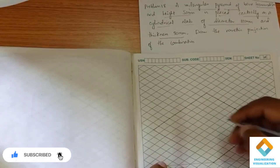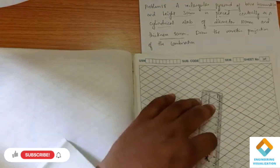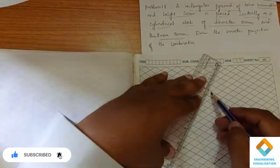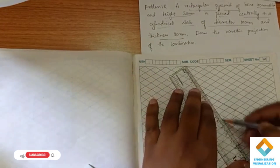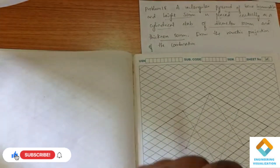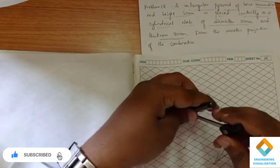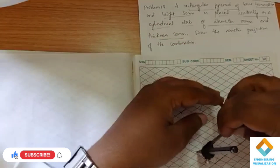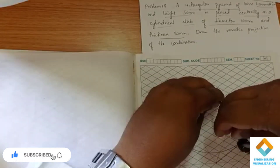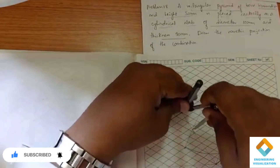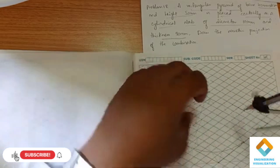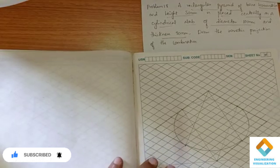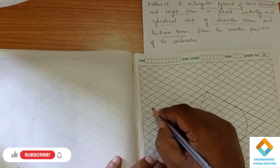Cylindrical slab means it is circular, and here we have the diameter given. So we mark the middle point — we have to go by the 4-center method. Taking the compass to draw the ellipse.